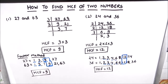This is how we can find the HCF of two numbers using the factor method or the ladder method. Whichever method you are comfortable with, you can use it. I hope this video is helpful. If you like the video, please hit the like button and subscribe to my channel for more math videos. Thanks for watching.